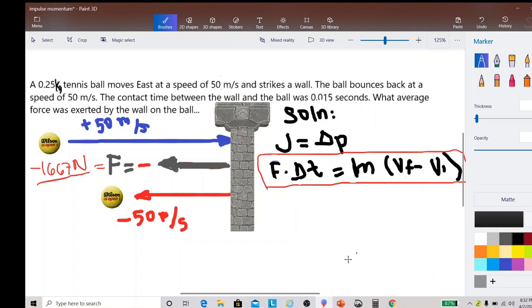Okay, let us try to solve this problem using the Impulse Momentum Theorem. A 0.25 kg tennis ball moves east at a speed of 50 m/s and strikes a wall. The ball bounces back at a speed of 50 m/s. The contact time between the wall and the ball was 0.015 seconds. What average force was exerted by the wall on the ball?